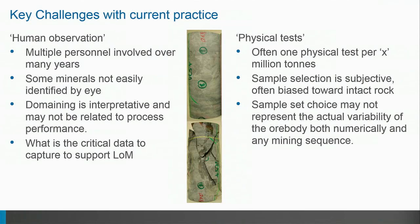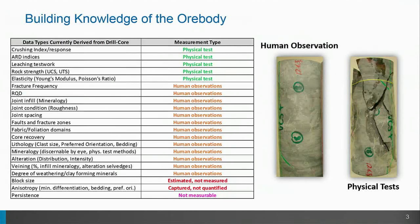Their world isn't all roses either. Their biggest challenge is that they have very few samples — the cost of the samples means they're not gathering a large amount of data. They recognize their sample is somewhat subjective, they're obviously only working with intact core, and quite often it's not fully representing the ore body — either the variability of the ore body numerically or the way it's going to be mined. So John brought forward the idea of how we would work on this to try and advance it: how we take a lot of this human observation and systemize it and integrate it against the physical test work.